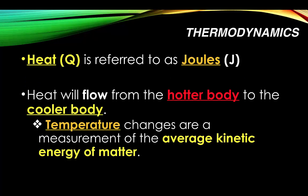Heat is measured in joules — joules is like saying inches or meters, it's just a measurement of heat. You'll sometimes hear it referred to as kilojoules. Heat will always flow from the hotter body to the cooler body, from high concentration of heat to low concentration of heat. Think of osmosis — osmosis always went from high concentration to low concentration. Same idea.